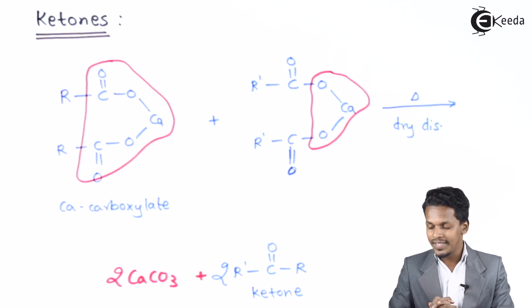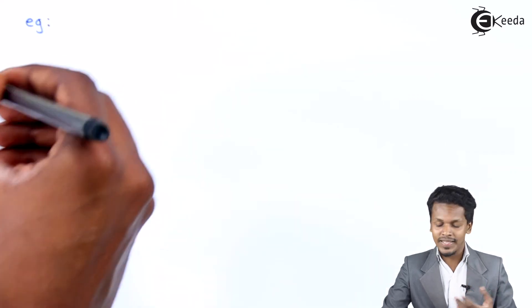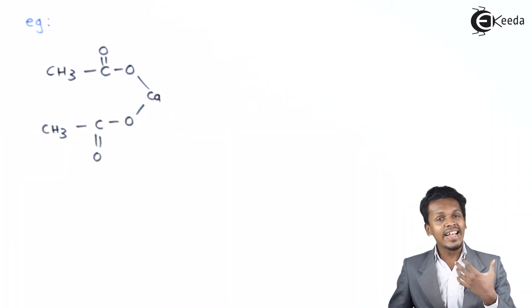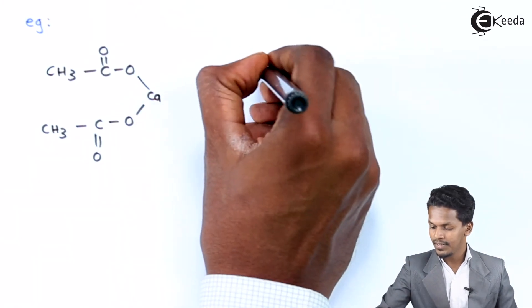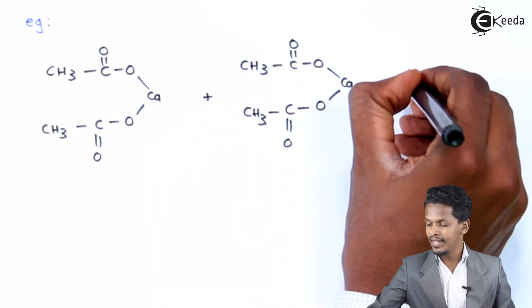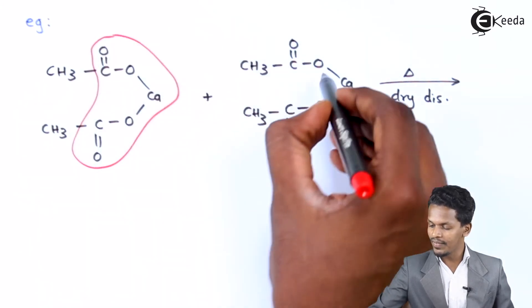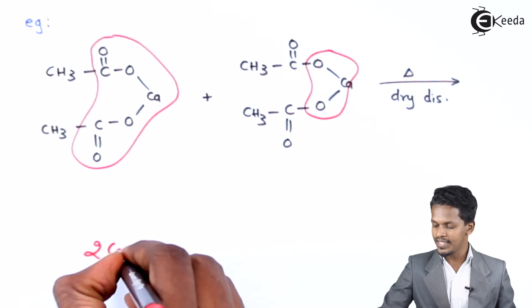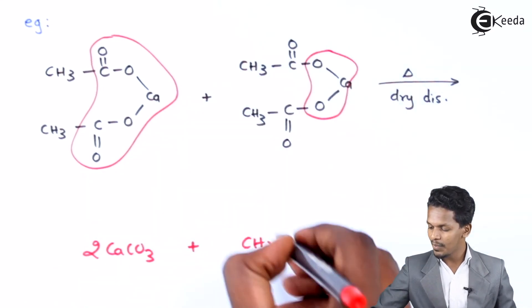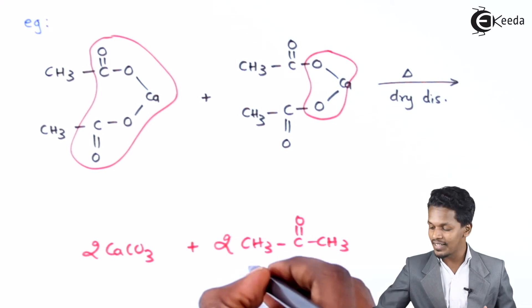Let me discuss the example for simple ketone formation. Suppose we have considered calcium acetate, and calcium acetate undergoes reaction with another calcium acetate. This undergoes a dry distillation process. The COO part from each molecule would be removed, giving two moles of CaCO₃ as byproduct. The product we get is CH₃–C(=O)–CH₃, so we will get two moles of CH₃–C(=O)–CH₃ — that is nothing but acetone.